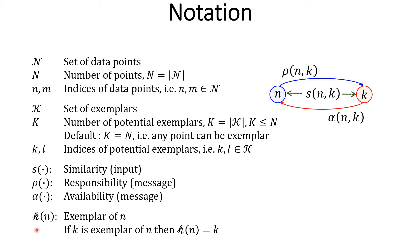Lastly, k(n) denotes the exemplar of point n. If k is the exemplar of n, then k(n) is equal to k.